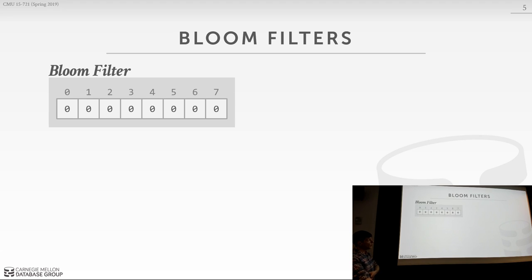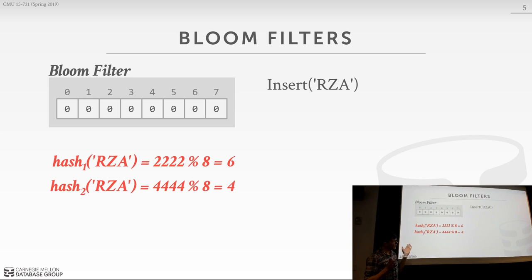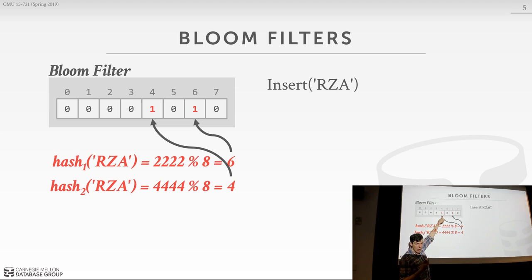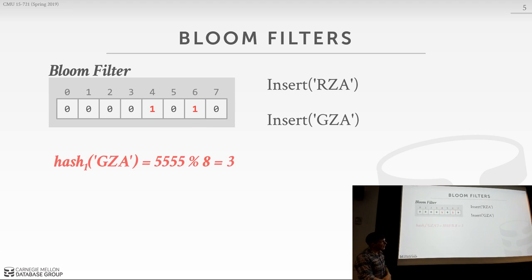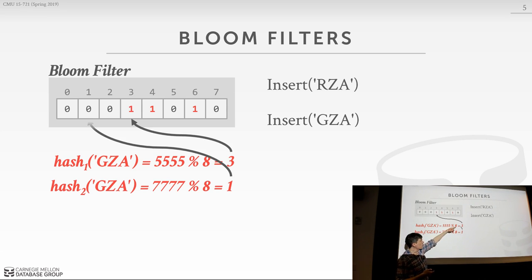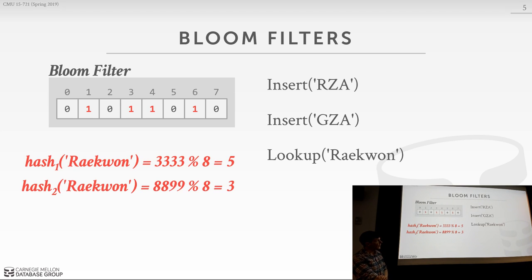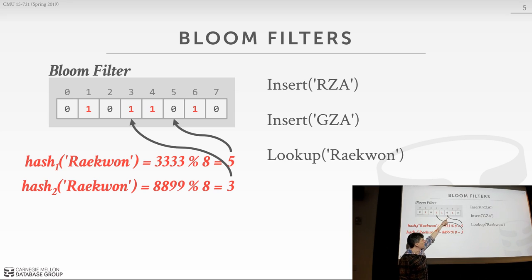Let's look at a simple example. You have an 8-bit bloom filter — initially all bits are zero. We want to insert the key RZA with k=2 hash functions. For the first hash function we get a value, mod by 8, and get 6 — so we set bit 6. The second hash function after modding by 8 gives us 4 — we set that bit. Then we insert JZA: first hash gives us 3, second gives us 1. Now let's do a lookup for Raekwon: the first hash function gives us 5, which is not set. The second gives us 3, which is set — but because at least one bit is zero, we know Raekwon is not in our set.